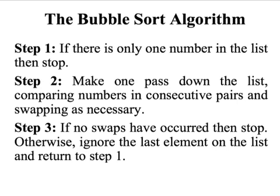In terms of a pencil and paper exercise, the bubble sort algorithm is actually quite straightforward. There are essentially three steps to it. Step one: if there's only one number in the list, then we don't really need to do anything — we can stop straight away.